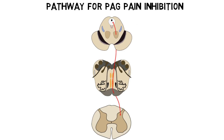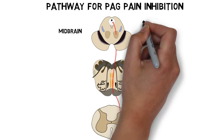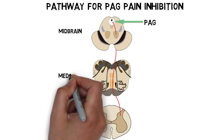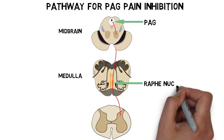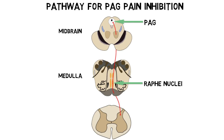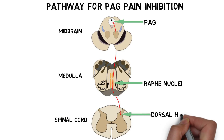The mechanisms underlying this PAG-induced analgesia are not completely understood, but the main pathway is thought to involve neurons that project from the PAG to serotonin-producing neurons of the medulla oblongata, known as the raphe nuclei. These activated raphe nuclei neurons project down to the dorsal horn of the spinal cord, where they inhibit neurons responsible for transmitting pain signals, inhibiting the ability of pain signals to reach the brain.